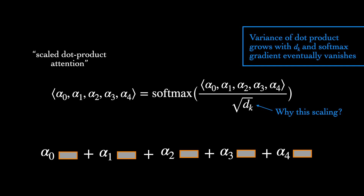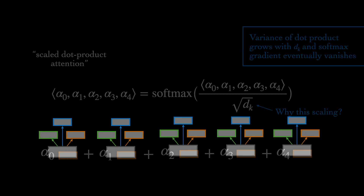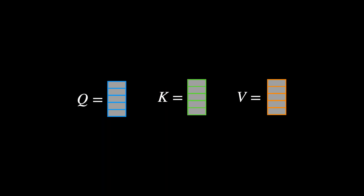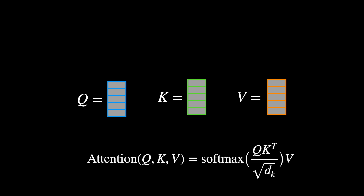We can think of the output as an updated representation for the first word. We don't only want to do this for the first word—we want to use this procedure for each word's representation in parallel. Let's stack these query, key, and value vectors into three matrices, which we'll call Q, K, and V. The attention operation can now be defined efficiently via a couple of matrix multiplications. The output will be another matrix, where each row is an updated representation for the word in the corresponding sequence position.